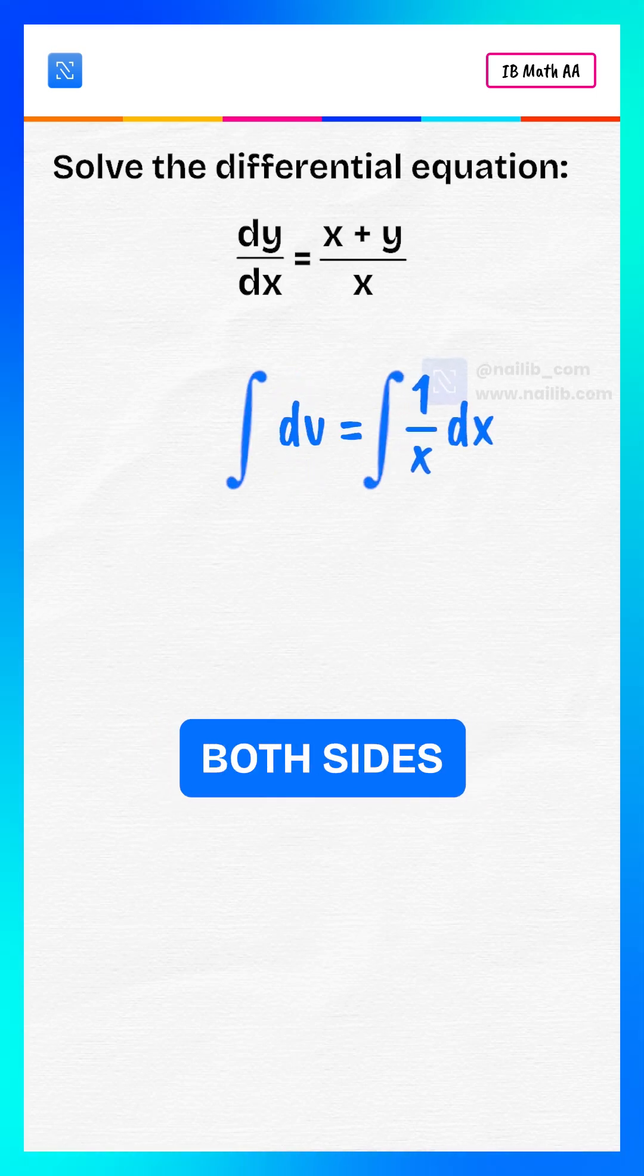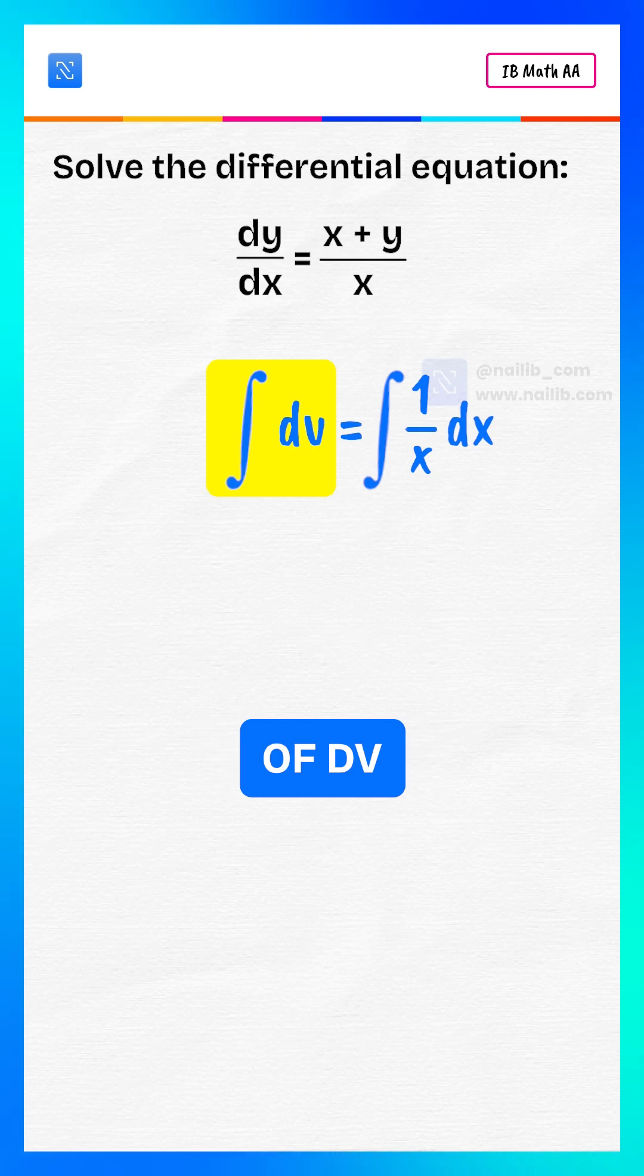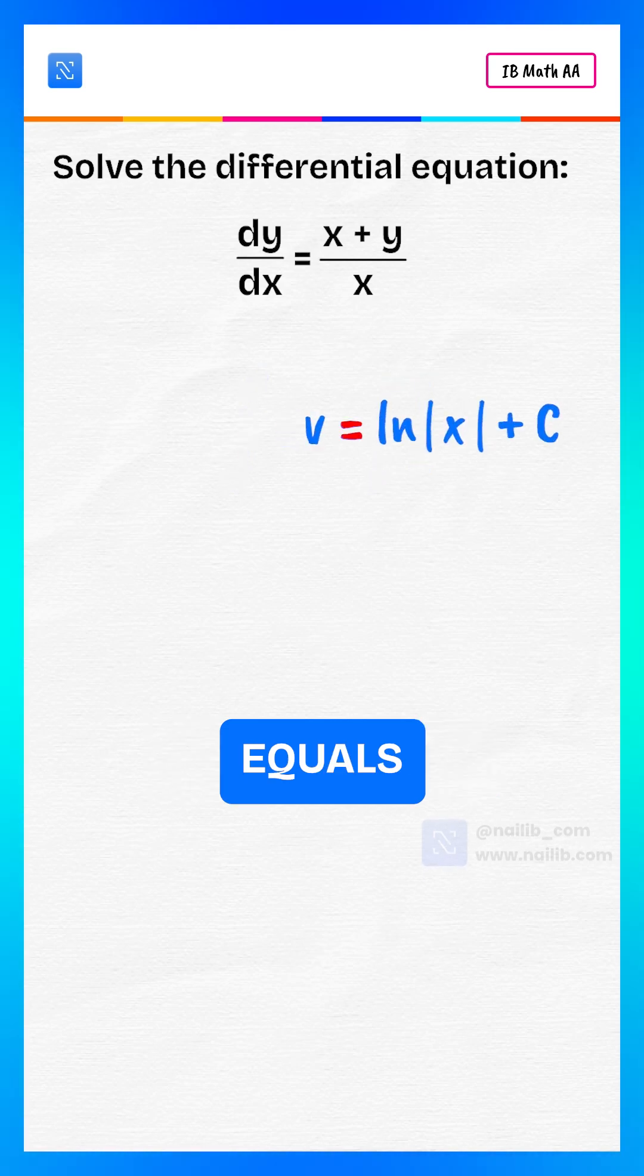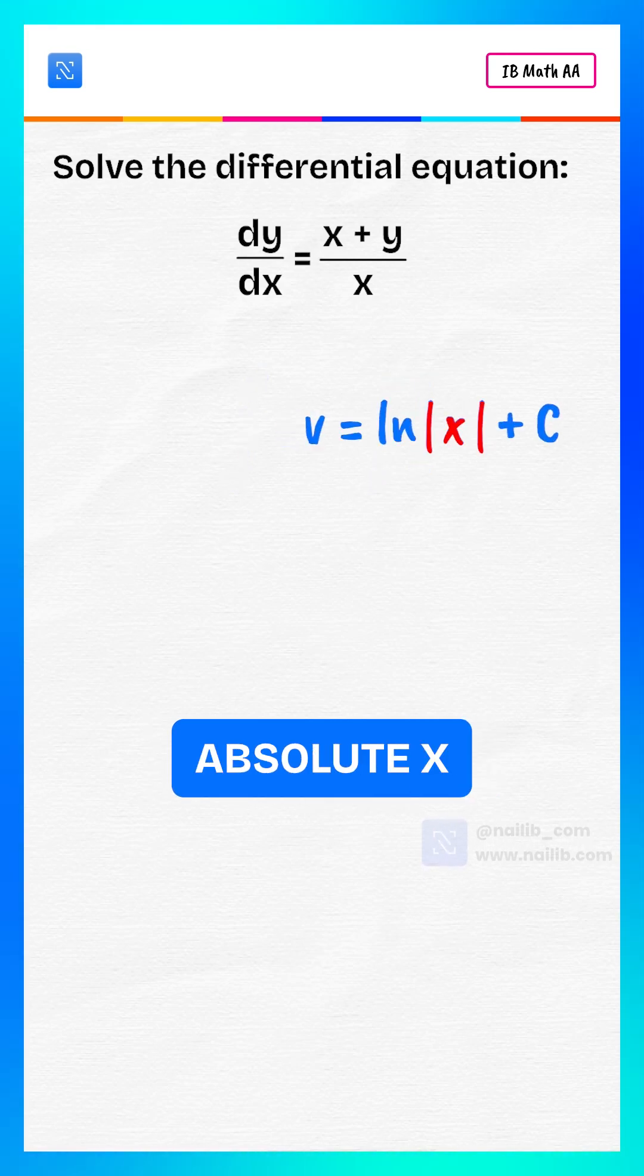Integrate both sides. Left side becomes integral of dv. Right side becomes integral of 1 divided by x with respect to x. So we get v equals natural log of absolute x plus c.